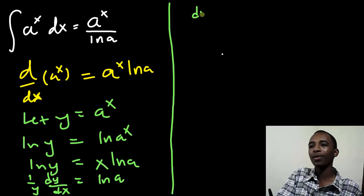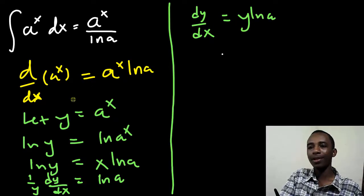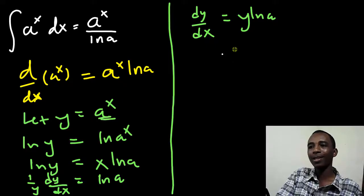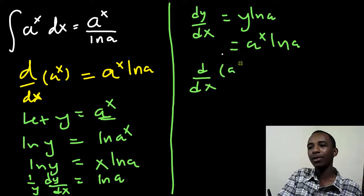So, my final answer for dy dx is y times the natural log of a, but y is a to the power x. So, there'll have it: a to the power x times natural log of a. So, that's the derivative of a to the x, a to the x natural log of a.